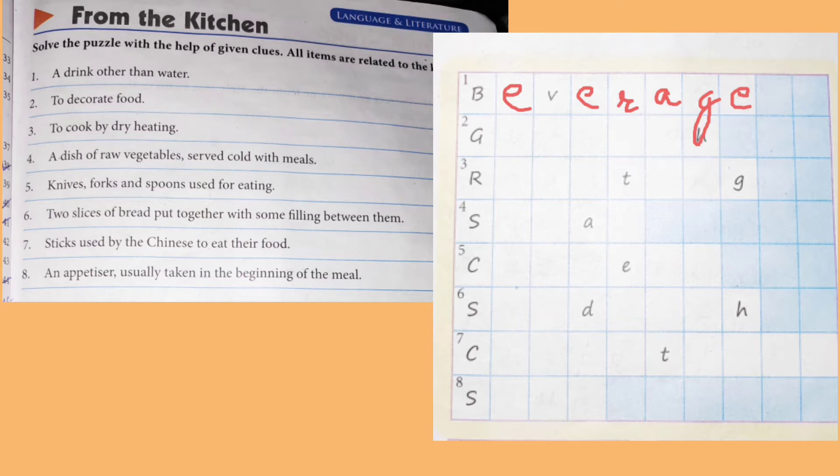Second, to decorate food. Third class we've also studied. Decorate food, that means garnish. What do we call it? Garnish. Like coriander, mint, we'll decorate it with coriander, mint, so this is garnish. So the spelling is G-A-R-N-I-S-H.